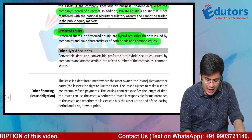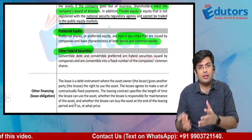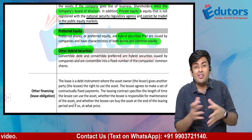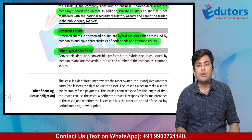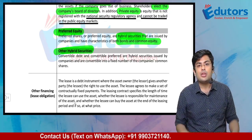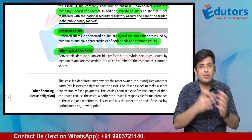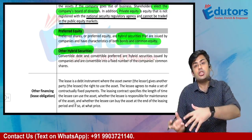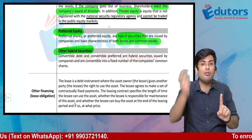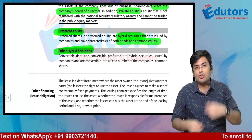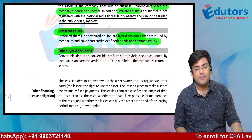There are other hybrid securities as well — for example, convertibles. Convertibles are instruments that can be converted into shares at a later point. A good example is convertible debentures — they are issued as debentures but after maybe three to five years, at maturity, they convert into shares. So somebody who subscribed to them receives shares at maturity, not cash. These are also classified as hybrid securities.